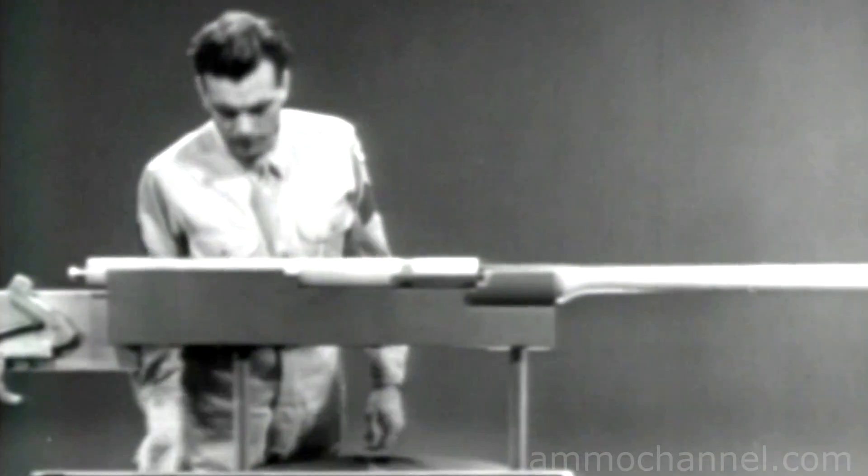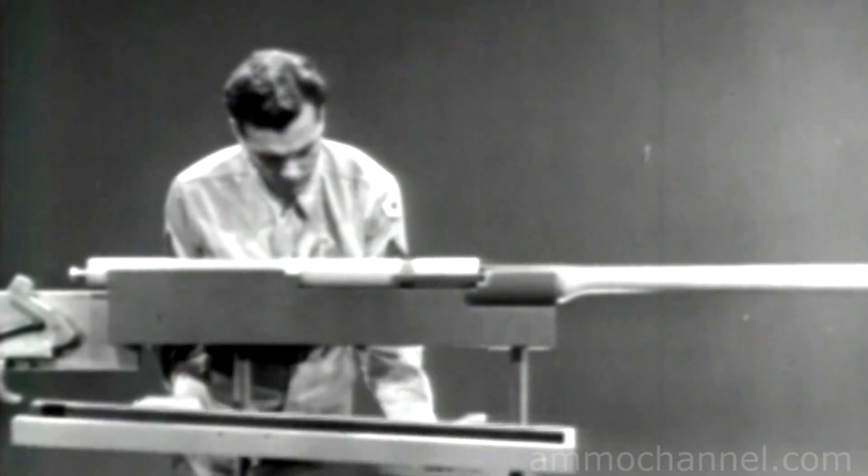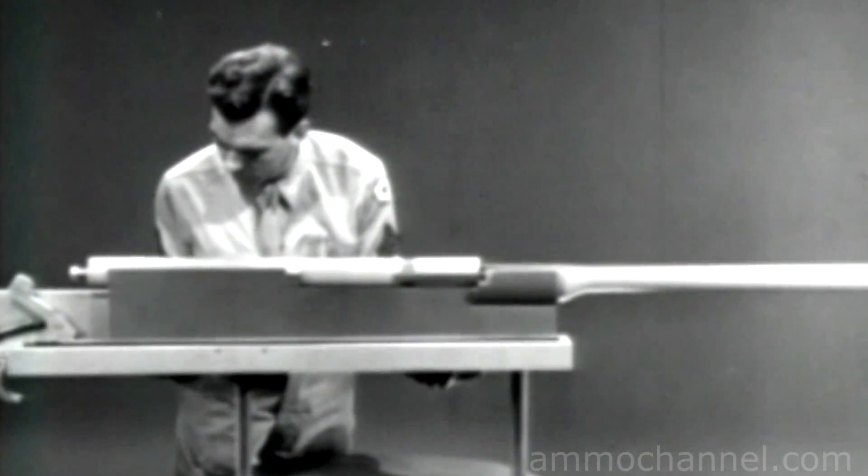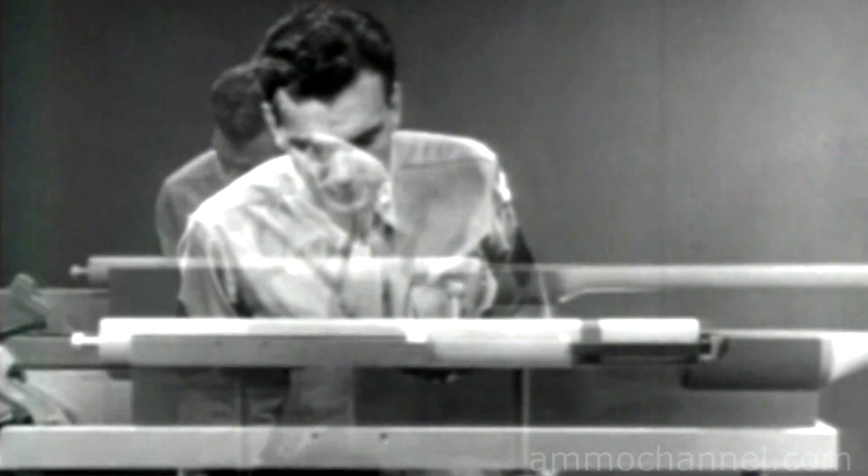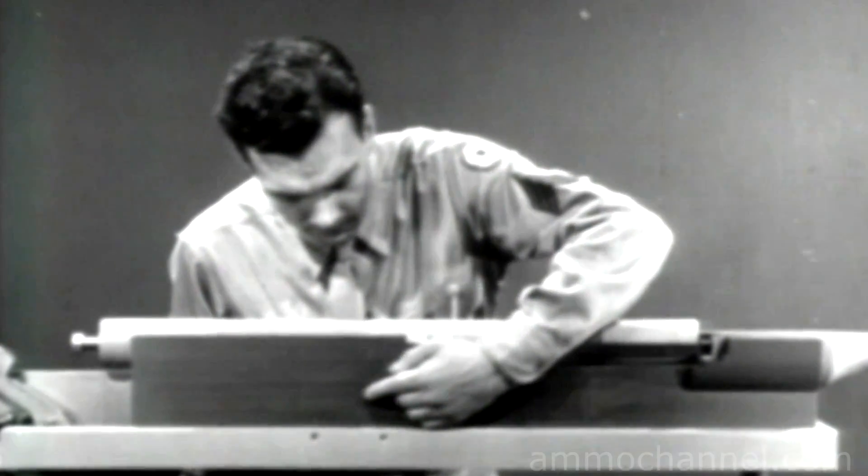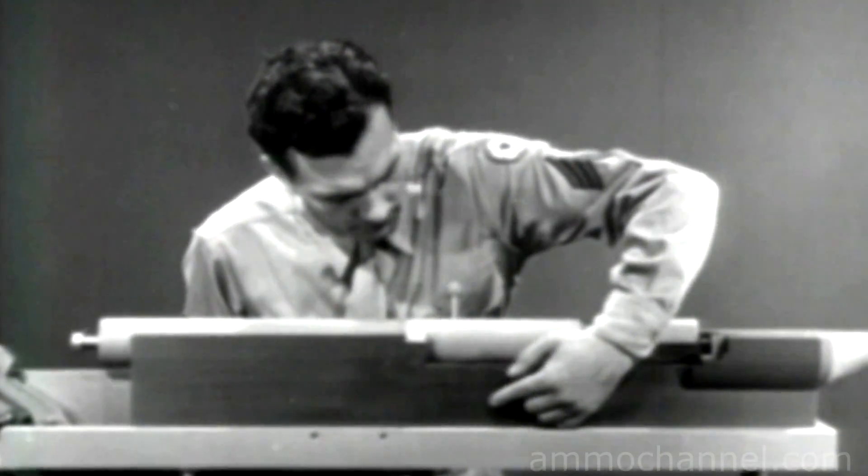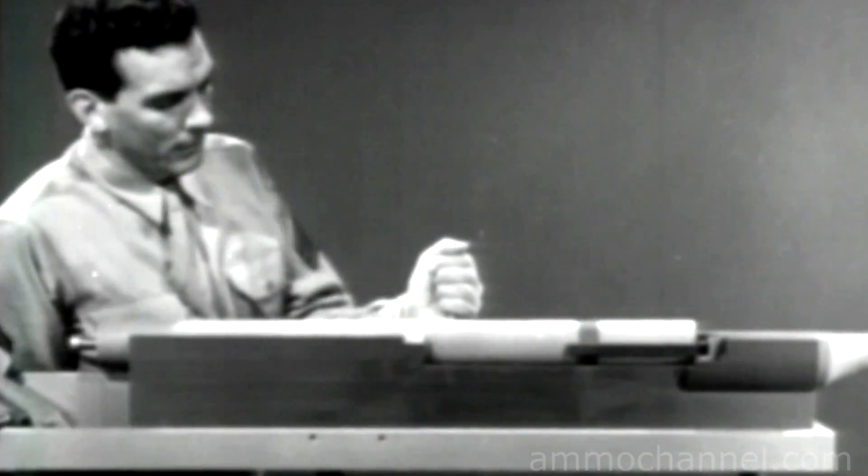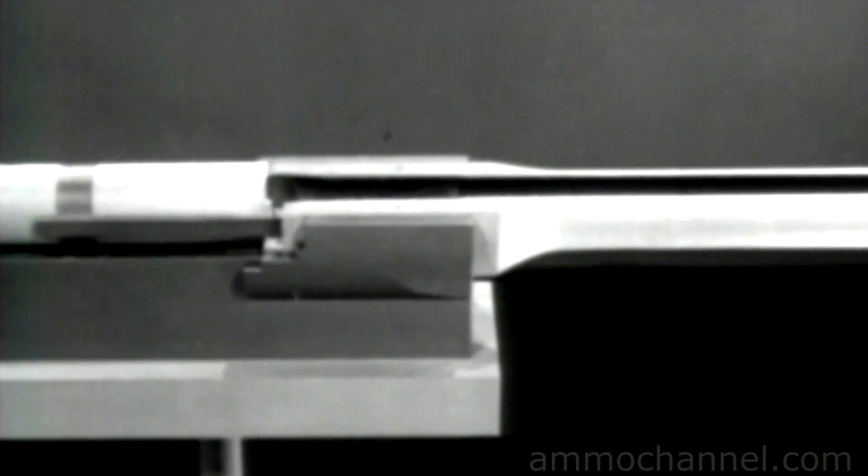To harness this recoil and put it to work, the weapon is placed inside a stationary housing known as the receiver. The part originally called the receiver now becomes the barrel extension. The barrel, barrel extension and bolt are locked together and are free to slide in the receiver.